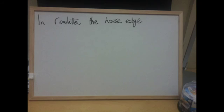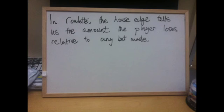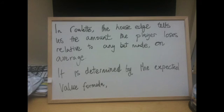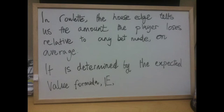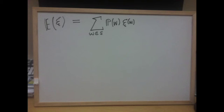In roulette, the house edge tells us the amount the player loses relative to any bet made on average. It can be thought of as the amount you are expected to win or lose depending on your bet. It is determined by the expected value formula, denoted E. The expected value of G — in other words, the expected value of our bet — equals the summation of the probability of W times G of W, where W is an element of S.